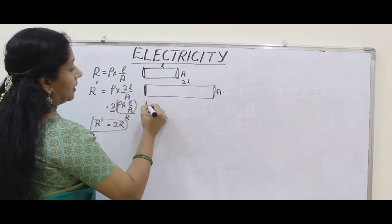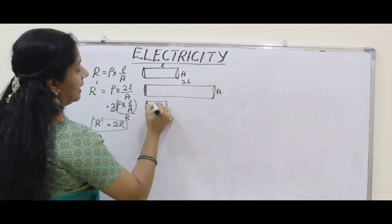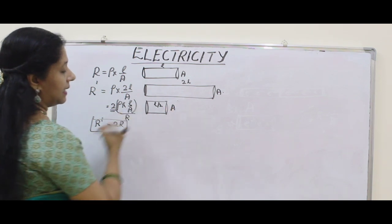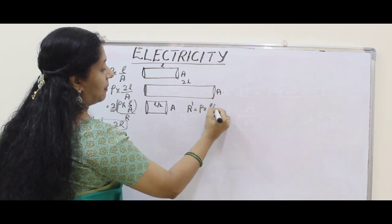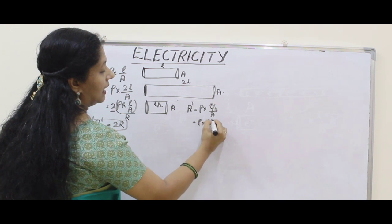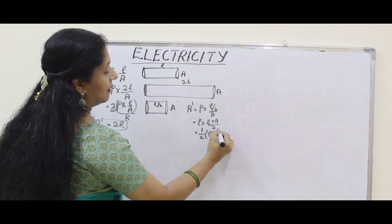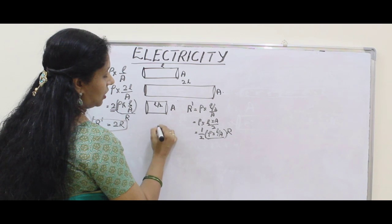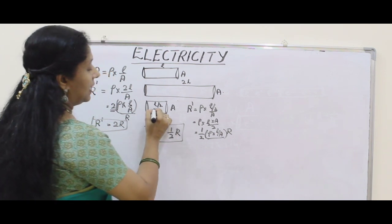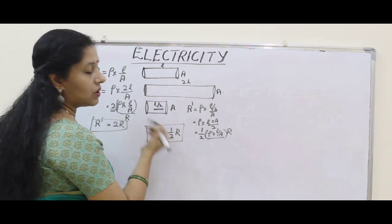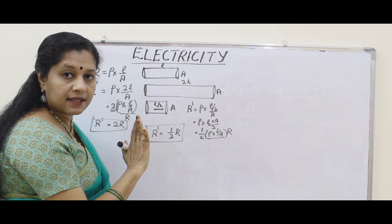Now if we reduce the length to L/2, keeping the same area, then R' = ρ × (L/2) / A = (1/2) × (ρL/A) = R/2. So when we halve the length without changing the area, resistance also becomes half. In all these cases, we did not change the area.